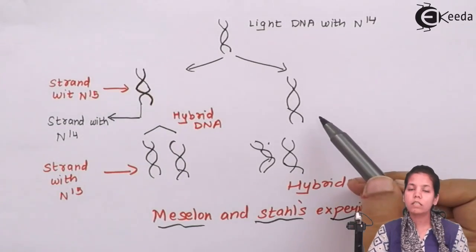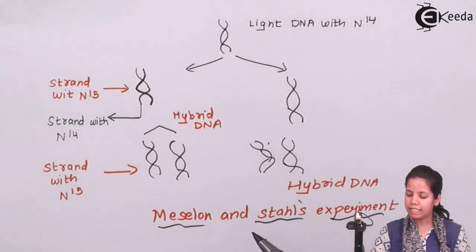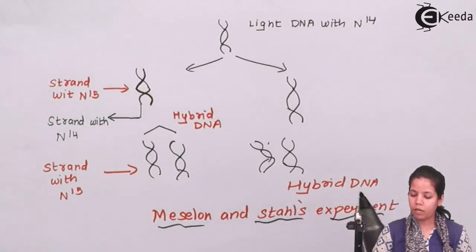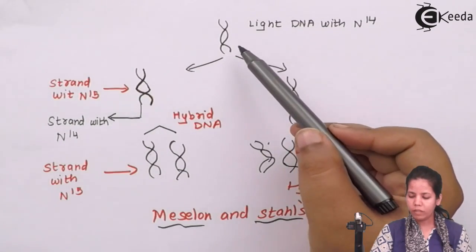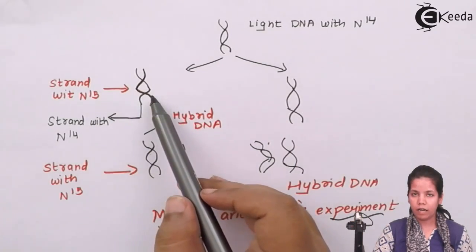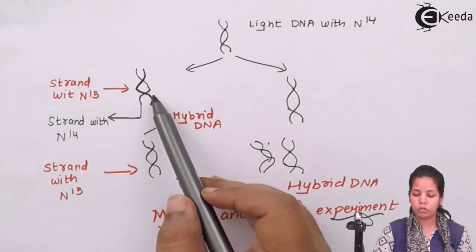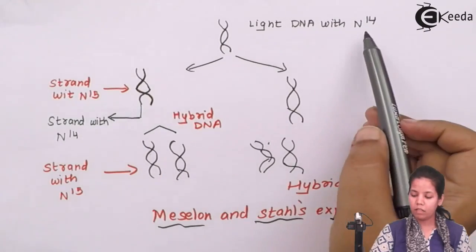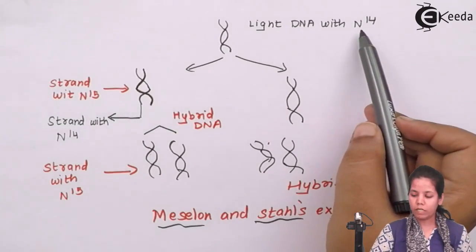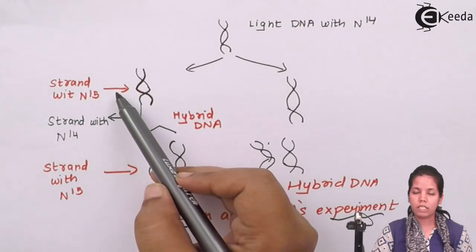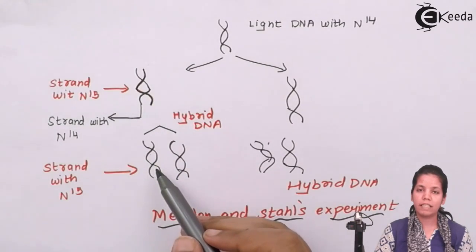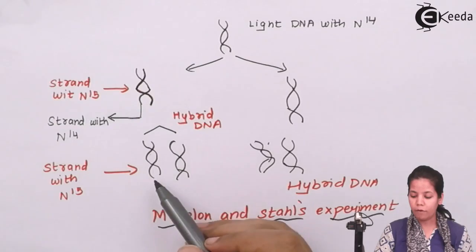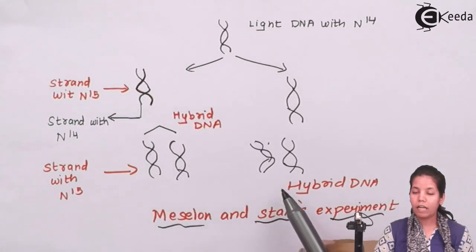This was the basis on which Meselson and Stahl's experiment was done. What he did was he took the light DNA that was N14, and along with light DNA he also took another DNA or you can say two isotopes, one was N15 and another was N14. Once the N14 and N15 DNA or isotopes were included in E. coli medium, E. coli medium would take that DNA or isotopes alternatively and what we observed was you got a hybrid DNA.